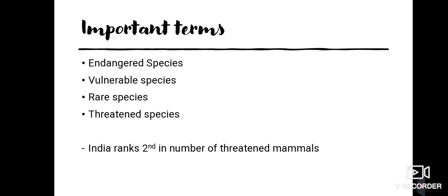Rare species, denoted by 'R,' are usually localized within restricted habitats or geographical areas, or are thinly scattered over an extensive area. They are not yet endangered or vulnerable but are at risk of becoming so. Threatened species, denoted by 'T,' are species that have declined significantly in population and may be at the edge of extinction in certain localities.